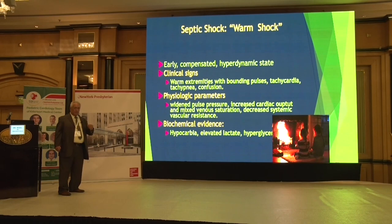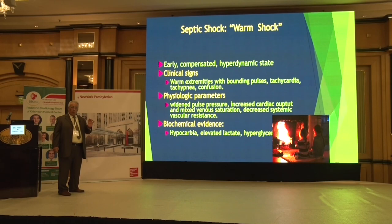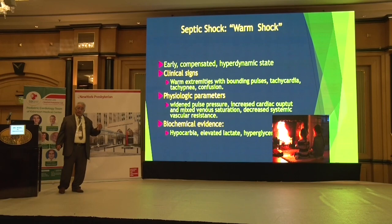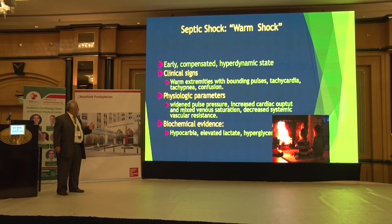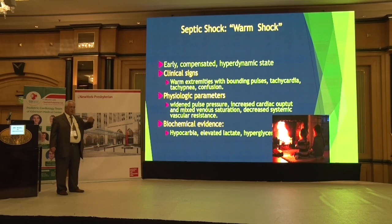The patient will be tachycardic and tachypneic. Blood gas will show metabolic acidosis — if you have a patient with unexplained metabolic acidosis, think about warm shock. History is also important: maybe receiving chemotherapy, immunocompromised, or there are signs of sepsis. Wide pulse pressure is very important and diagnostic. Cardiac output is increased because of tachycardia, mixed venous saturation will be high, but systemic vascular resistance is decreased. The patient is hypocarbic, lactate is high, and hyperglycemic.